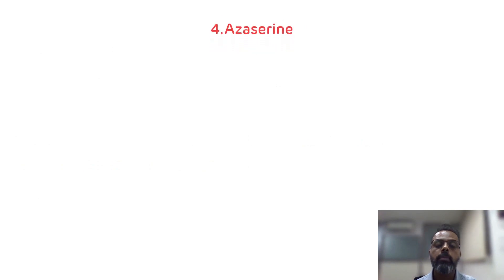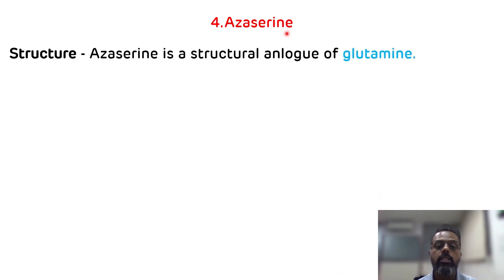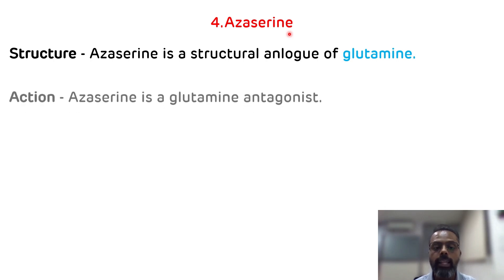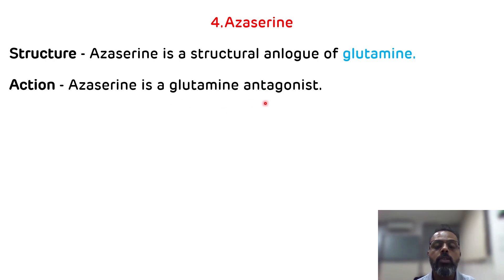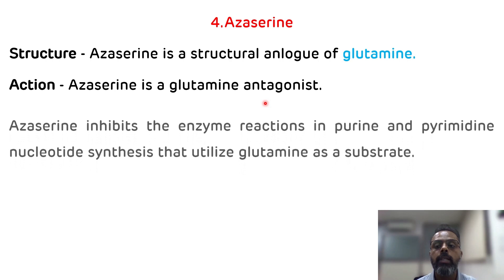The fourth example is azaserine. Azaserine is a structural analog of glutamine. Its mechanism of action: azaserine acts as a glutamine antagonist, inhibiting enzymes of purine and pyrimidine nucleotide synthesis which require glutamine as a substrate.